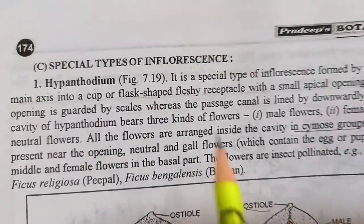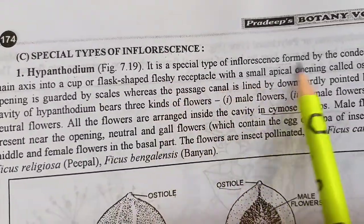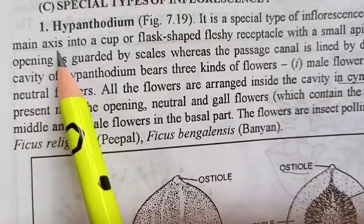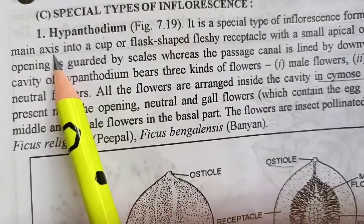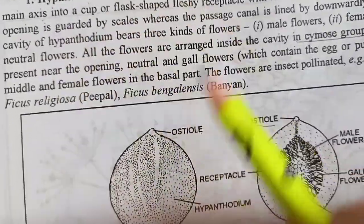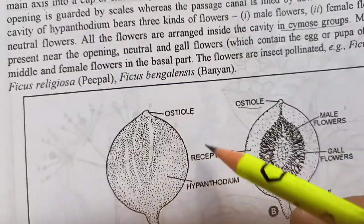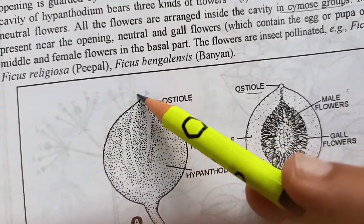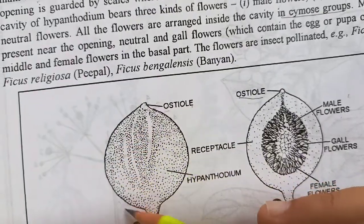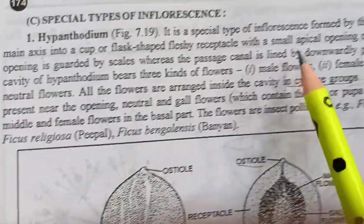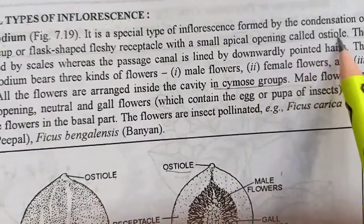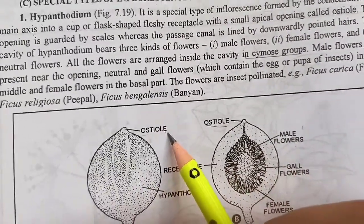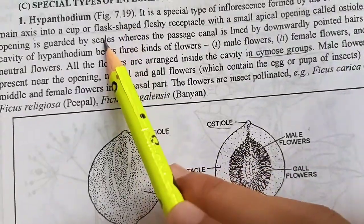It is a special type of inflorescence which is formed by condensation of main axis — peduncle — into a cup or flask shape receptacle. The receptacle has a small opening called osteol, and osteol is guarded by scales.